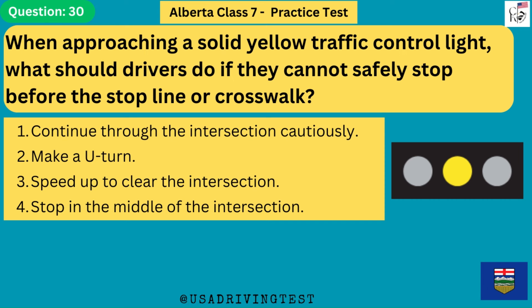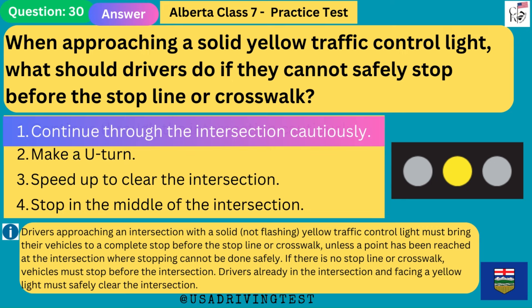When approaching a solid yellow traffic control light, what should drivers do if they cannot safely stop before the stop line or crosswalk? 1. Continue through the intersection cautiously. 2. Make a U-turn. 3. Speed up to clear the intersection. 4. Stop in the middle of the intersection. The answer is 1: continue through the intersection cautiously. Drivers approaching a solid yellow light must bring their vehicles to a complete stop before the stop line or crosswalk, unless stopping cannot be done safely. Drivers already in the intersection facing a yellow light must safely clear the intersection.